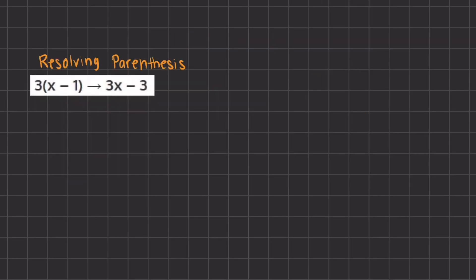Our next simplification method is resolving parentheses. When we resolve parentheses, we take the coefficients that are outside of the parentheses and distribute them into the parentheses. On the right-hand side is our answer — the resolved parentheses answer.